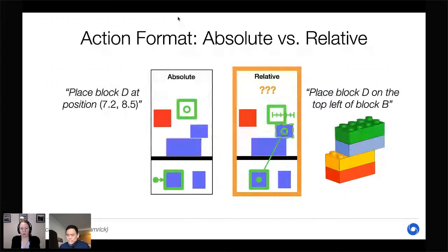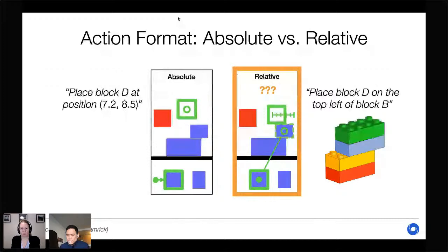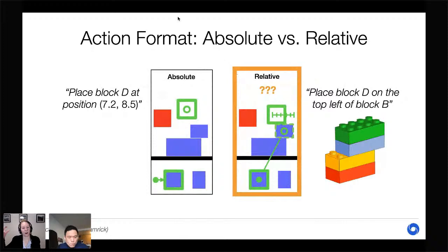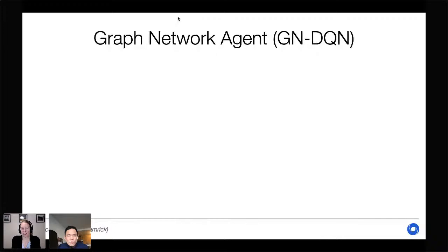Most agent architectures assume a fixed-size action space, but here actions are defined based on objects in the scene, so the number of actions changes as the number of objects changes. If you can pick up any object and place it on any other, you have N-squared possible actions. To deal with this, we designed a new type of agent called GNDQN — Graph Network DQN.